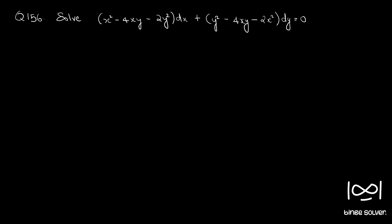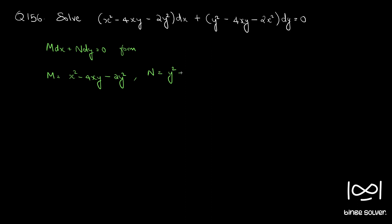Here we see it is in the form M dx plus N dy equal to 0. So M equals x² - 4xy - 2y², and N equals y² - 4xy - 2x².